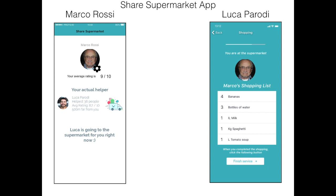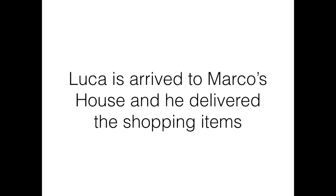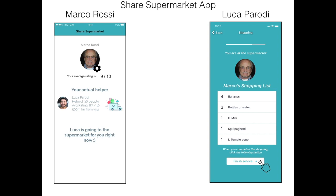Now Luca is going to the supermarket. Marco is notified that Luca is at the supermarket right now. When Luca has come back and delivered the food to Marco, he can click to finish the service. And now they can give each other a review for the service.